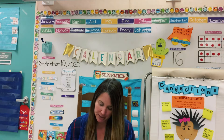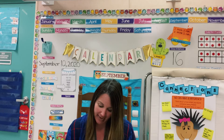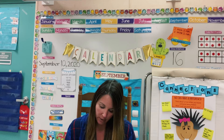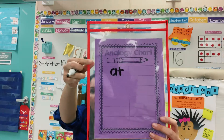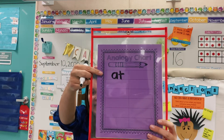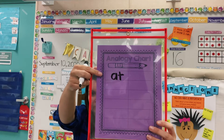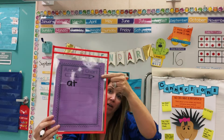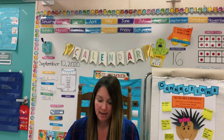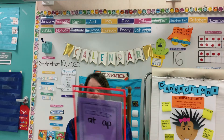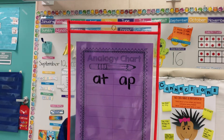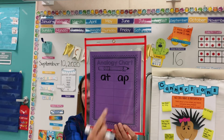The first thing we're going to do is write 'at.' We worked on 'at' words last week, so I'm going to write that at the top on this side. At. Then on this side up here on the top are words this week — 'ap.' I'm going to write them on the other side. So my analogy chart is going to look like this: I have 'at' and 'ap.'